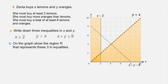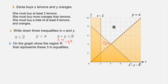For example, taking the point (3, 4): 3 + 4 = 7, which is not ≥ 8, confirming the region below x + y = 8 is unwanted and gets shaded. After shading all unwanted regions, the remaining clear region R satisfies all three inequalities.